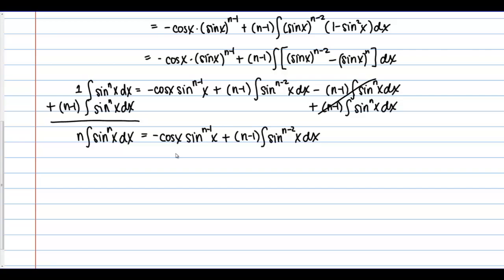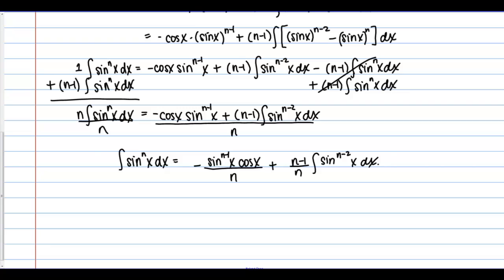You may be able to see what my last step should be. To isolate this integral of sine to the n of x, I'm going to simply divide both sides by n. And then, with just a little bit of rearranging, we get the reduction formula we saw in the beginning.